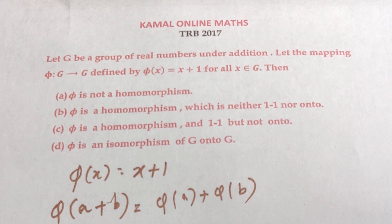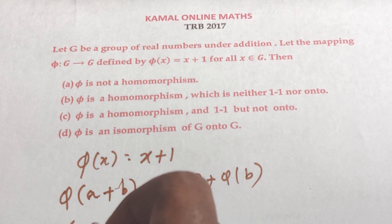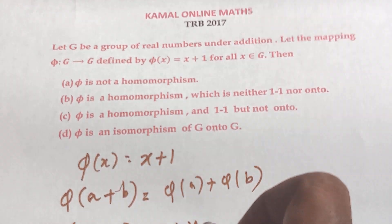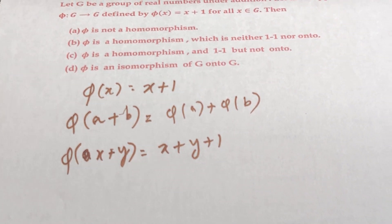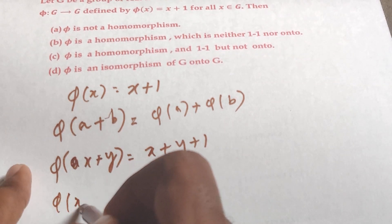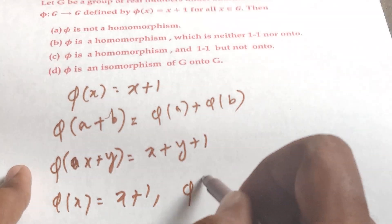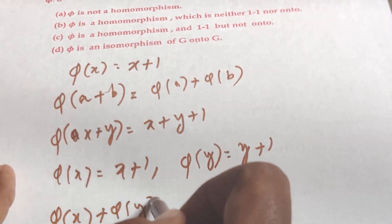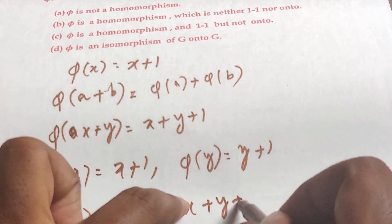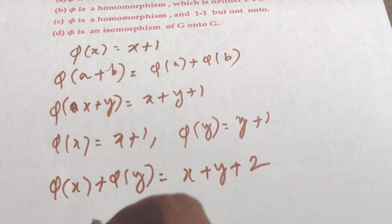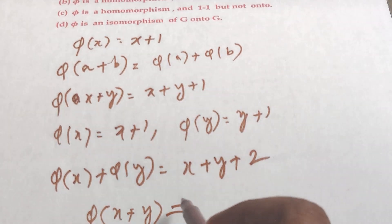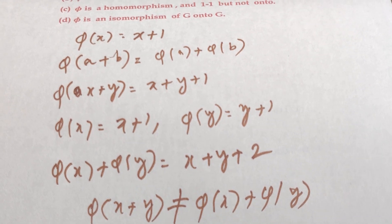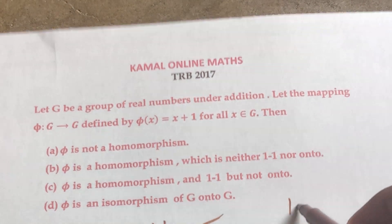Since phi of X equals X plus 1, we compute phi of X plus Y equals (X plus Y) plus 1. But phi of X plus phi of Y equals (X plus 1) plus (Y plus 1) equals X plus Y plus 2. Since X plus Y plus 1 is not equal to X plus Y plus 2, phi of X plus Y does not equal phi of X plus phi of Y. Also, phi of X equals X plus 1 is a one-to-one and onto function.